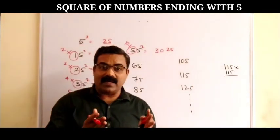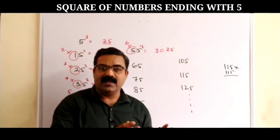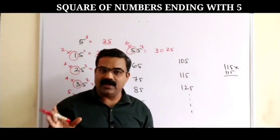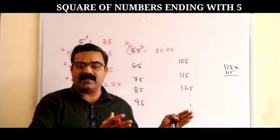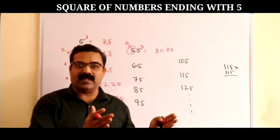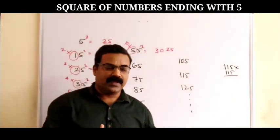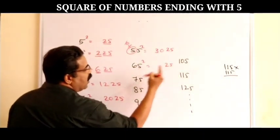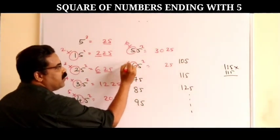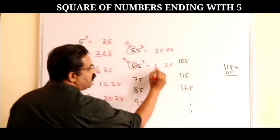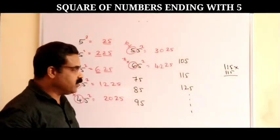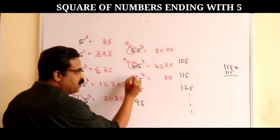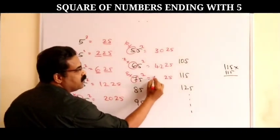Now you've got the trick and the pattern. How to find the square of any number ending with 5: the last two digits of the answer will be 25. The remaining part is obtained by multiplying the prefix (everything other than the 5) by its next number. For 65²: 6 × 7 = 42, answer is 4225. For 75²: 7 × 8 = 56, answer is 5625.